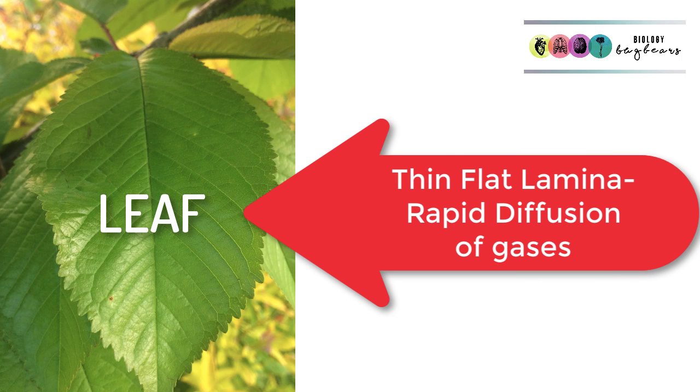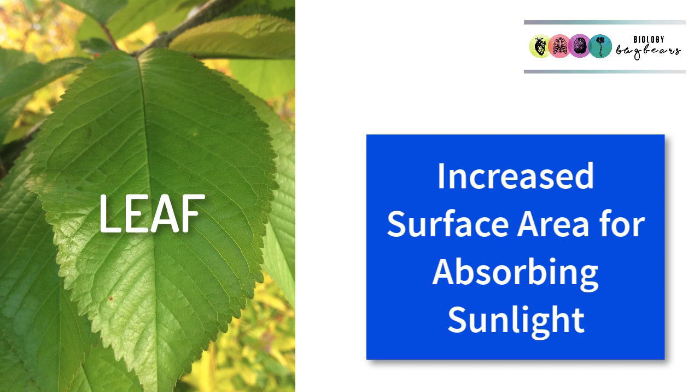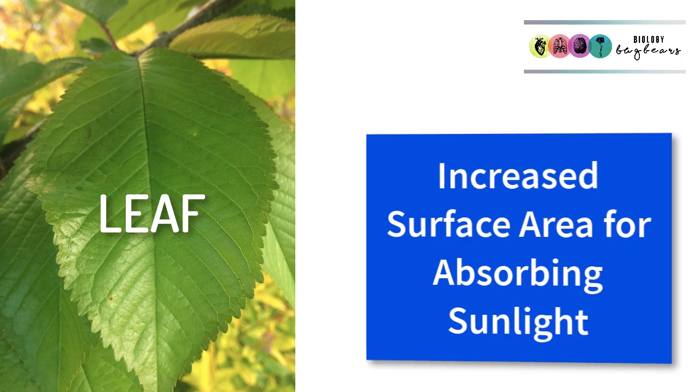Firstly, the leaves are thin, flat lamina. Being very thin is good because it allows for the rapid diffusion of carbon dioxide into those cells and the rapid diffusion of oxygen out of the leaf. Being flat means it increases the surface area for absorbing all of that sunlight.